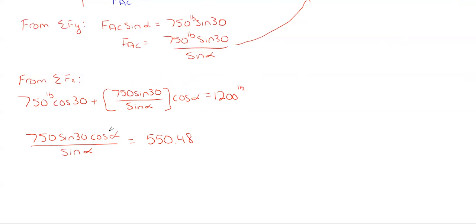Okay, so what do we do with cosine of alpha in the numerator and sine of alpha in the denominator? Well, using trig identities here, when you have cosine of alpha divided by the sine of alpha, well that equals 1 over the tangent of that same angle. So we can substitute this in here and that way we have alpha occurring only in one spot. So doing this trig substitution, we end up with 750 sine of 30 divided by the tangent of my alpha is equal to the 550.48.